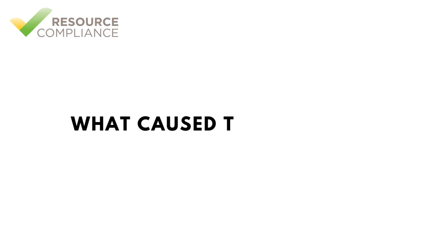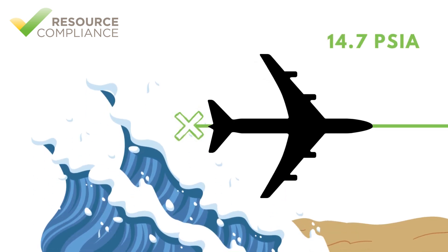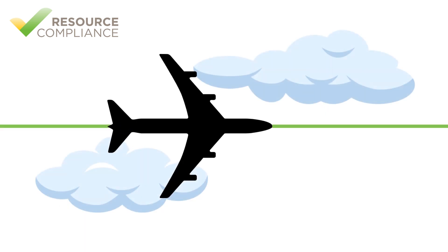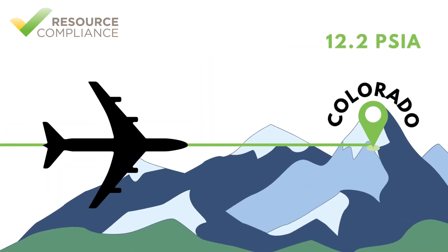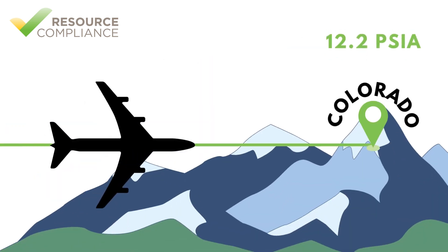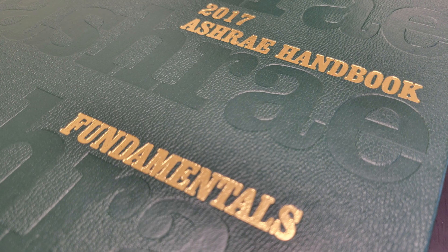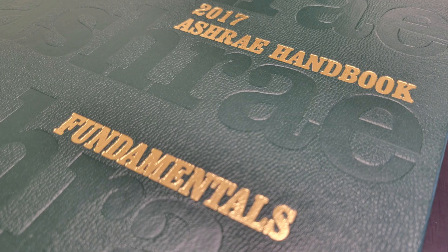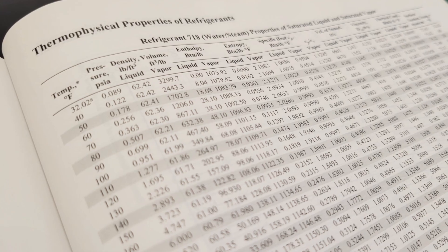What caused this change? As we change altitude, the atmospheric pressure changes. At an altitude of one mile, the atmospheric pressure is 12.2 PSIA, which caused a change in the saturation temperature. This is important because it teaches us that the saturation temperature is dependent on the pressure.